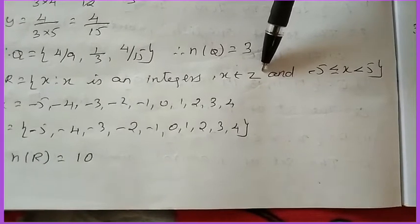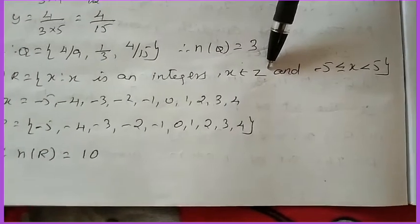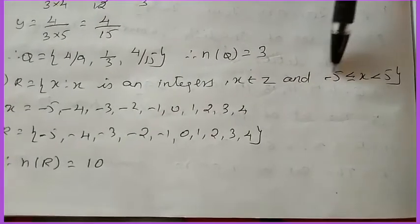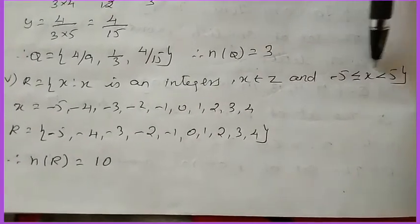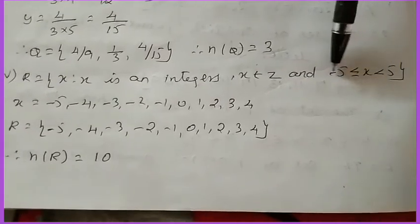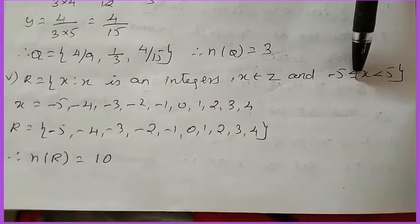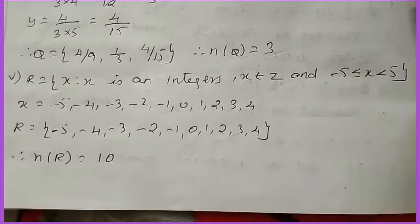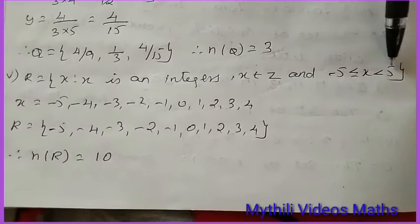Integer means we have both positive and negative values there, and they have given the condition minus 5 less than or equal to x is less than 5. So here from minus 5, less than or equal symbol they have given, so minus 5 is also included. See here, x is less than 5, so less than 5 means till 4. So 5 is not included.